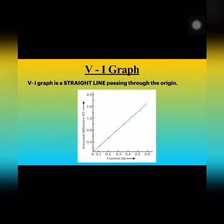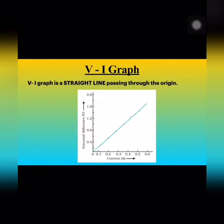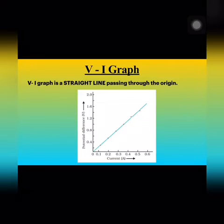Now the VI graph. If a graph is drawn between the potential difference and the corresponding current, the graph is found to be a straight line passing through the origin. A straight line graph can be obtained only when the two quantities are directly proportional to one another. Since current and potential difference are directly proportional, the graph comes out to be a straight line.